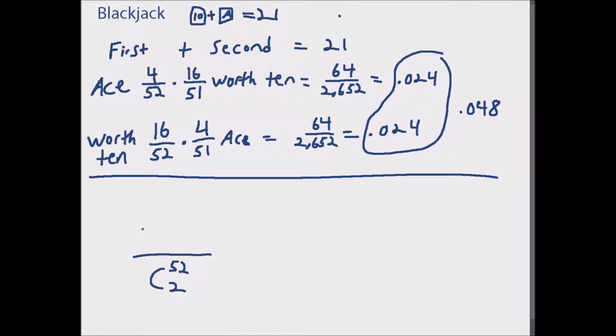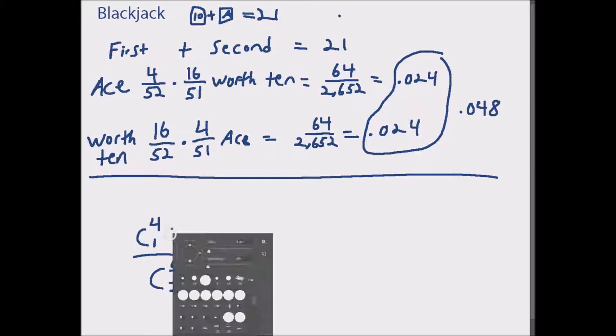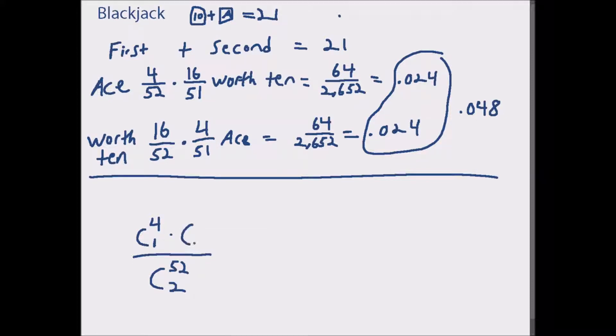How many combinations of aces are there? Four aces and we only want one. We multiply that by another combination: 16 cards worth 10 and we only want one of them. If we work this out, C(4,1) is 4 times C(16,1) is 16.